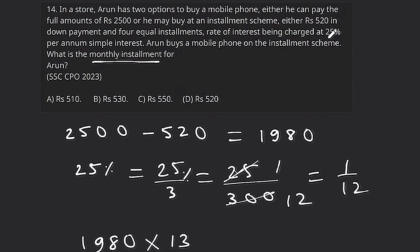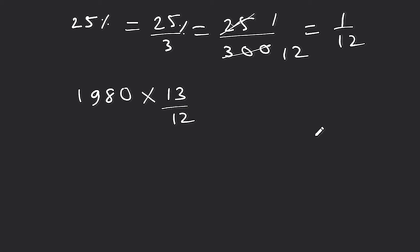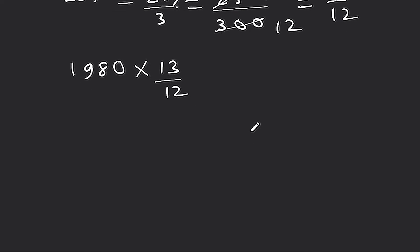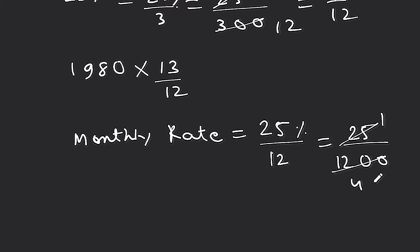The rate of interest is 25% per annum, and this is simple interest. Now since the installment payment is monthly, we need the monthly rate of interest. To convert the yearly rate to monthly, we divide: 25 divided by 12, upon 100. This simplifies to 25/1200, which equals 1/48. So the monthly rate of interest is 1/48.